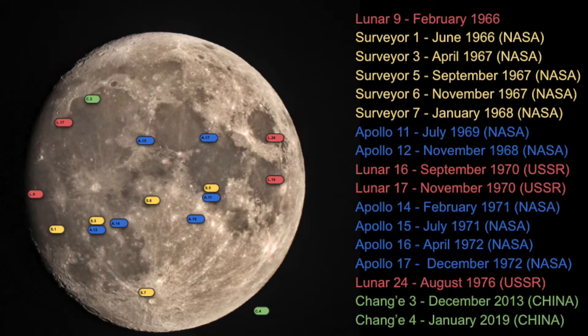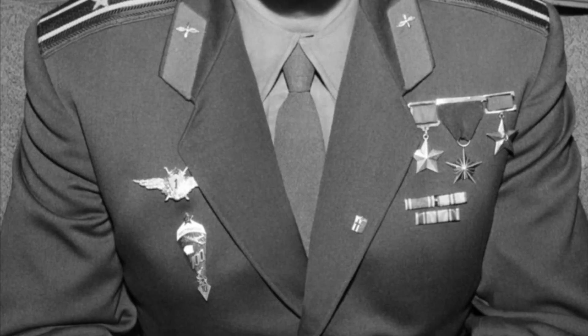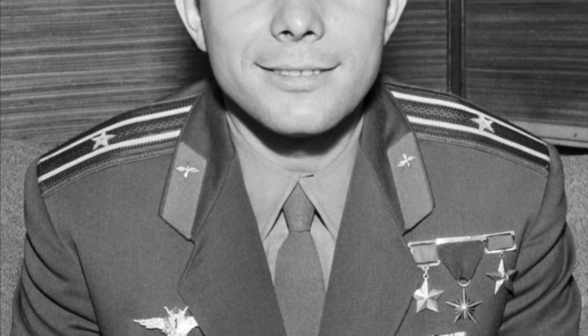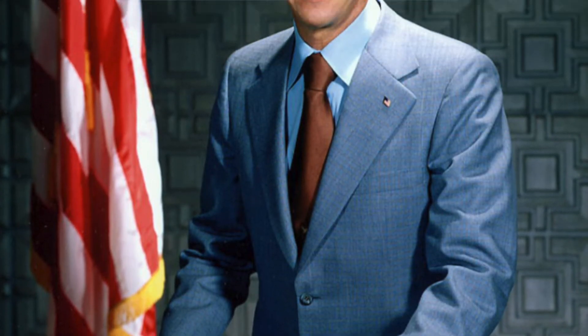A few things stand out when looking at this single image. In the 1960s, the Cold War between America and Russia was in full swing, with political tension pushing towards even the moon. The space race was on — Russia had already beaten the US by placing the first man in space, Yuri Gagarin, in April 1961, followed by the American Alan Shepard in May 1961.